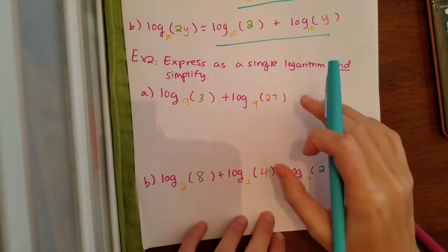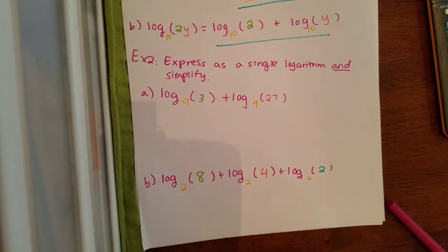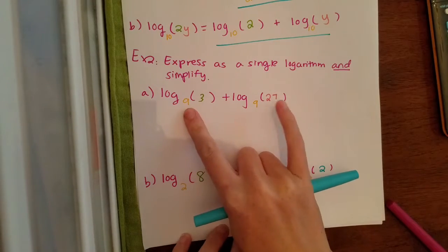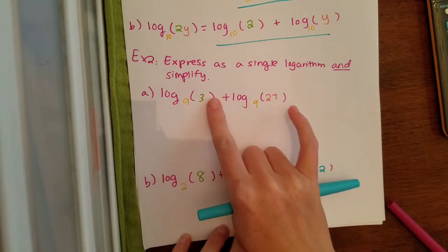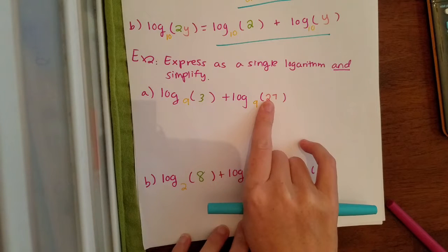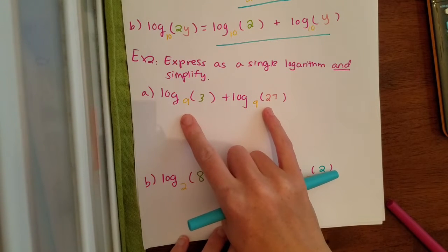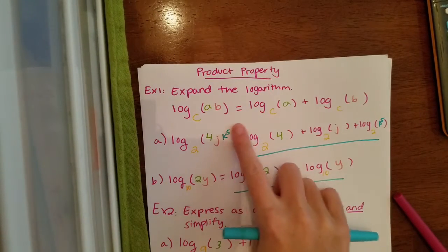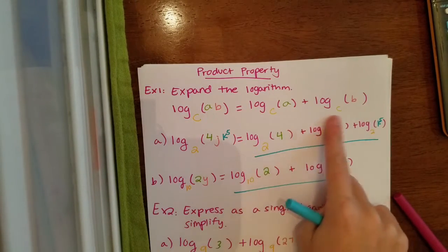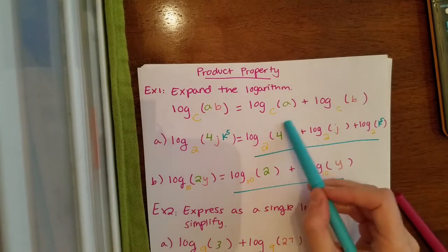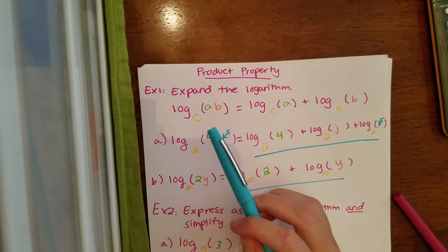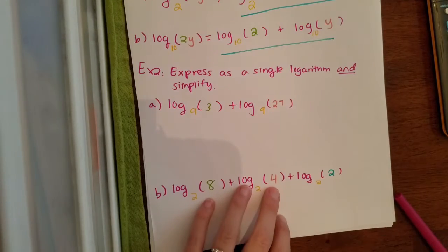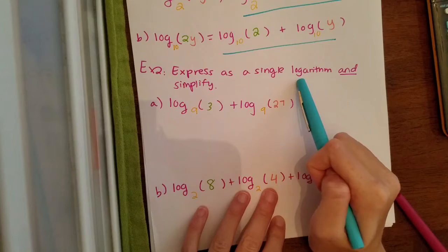For example two, it's similar to example one but now we are reversing the process. We have addition signs with one little number in each log. Two logs separated by an addition sign — using the product property from up here — if we reverse it and go this way, addition signs mean you can combine them into one log and multiply all the pieces that are in the log.